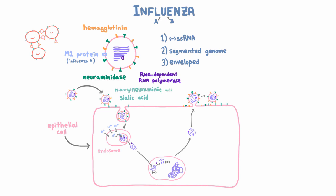That's where neuraminidase comes in. It turns out sialic acid is actually also called N-acetylneuraminic acid. You don't need to remember that name, but it's a hint that neuraminidase serves to chop sialic acid off from whatever protein it's attached to, and that allows the virus to go free and infect a new cell. This whole replicative process takes about eight hours and causes the cell to die.